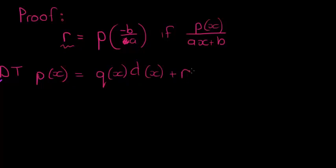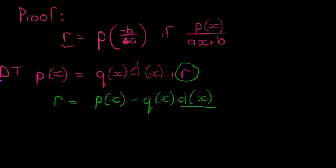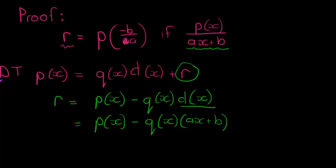...and then p(x) is equal to my quotient times my divisor plus my remainder. Now, from here, if I solve for r, I have a formula for my remainder. My remainder would be equal to my polynomial minus the product of the quotient and the divisor. Okay, but now we know what the divisor is. Because that's just ax plus b. Okay, we don't know what the polynomial is. The polynomial is not given yet. Okay, we don't know what the quotient is, but we do know that our divisor is ax plus b.